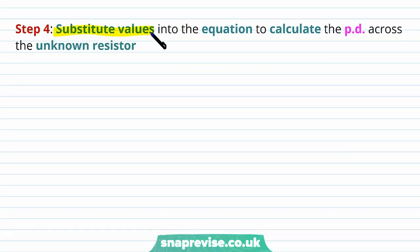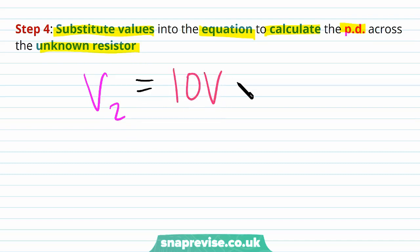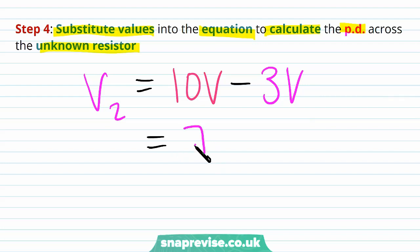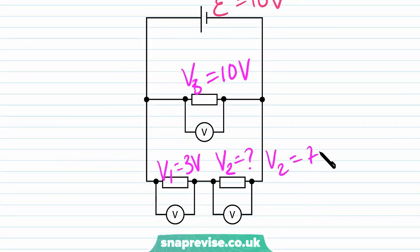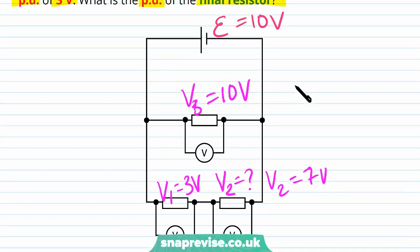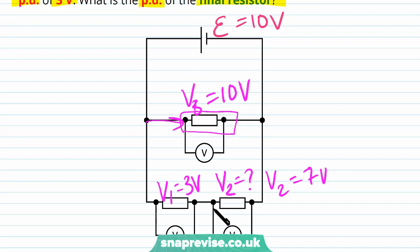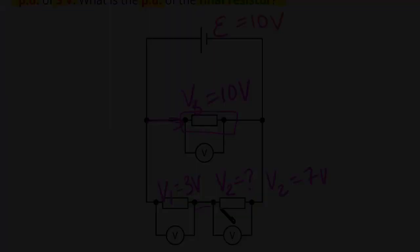Step four: substitute values. V2 equals 10 volts minus 3 volts, which gives 7 volts. So the potential difference of the second resistor is 7 volts. We can verify: V1 plus V2 equals 3 plus 7 equals 10 volts, which matches the EMF — consistent with Kirchhoff's second law. We can also see that in the other branch, the potential difference across that resistor is also 10 volts, equal to the EMF. So the potential difference across each branch equals the EMF provided to the circuit.